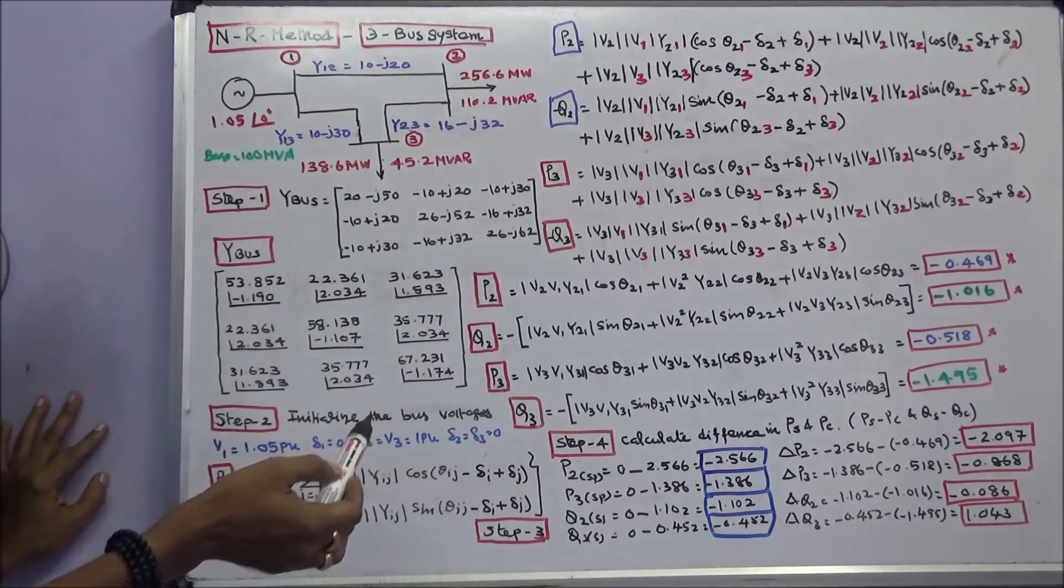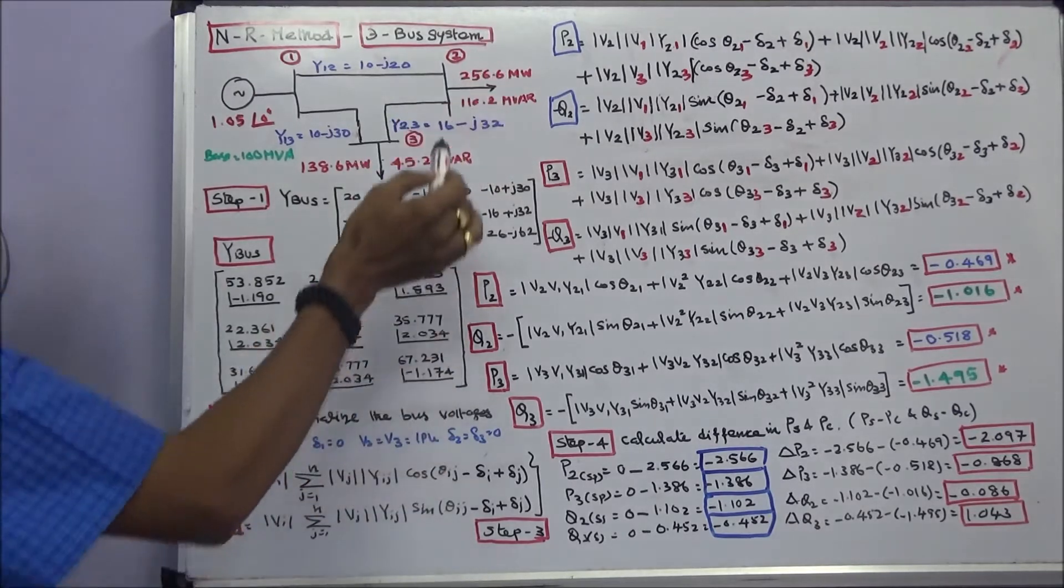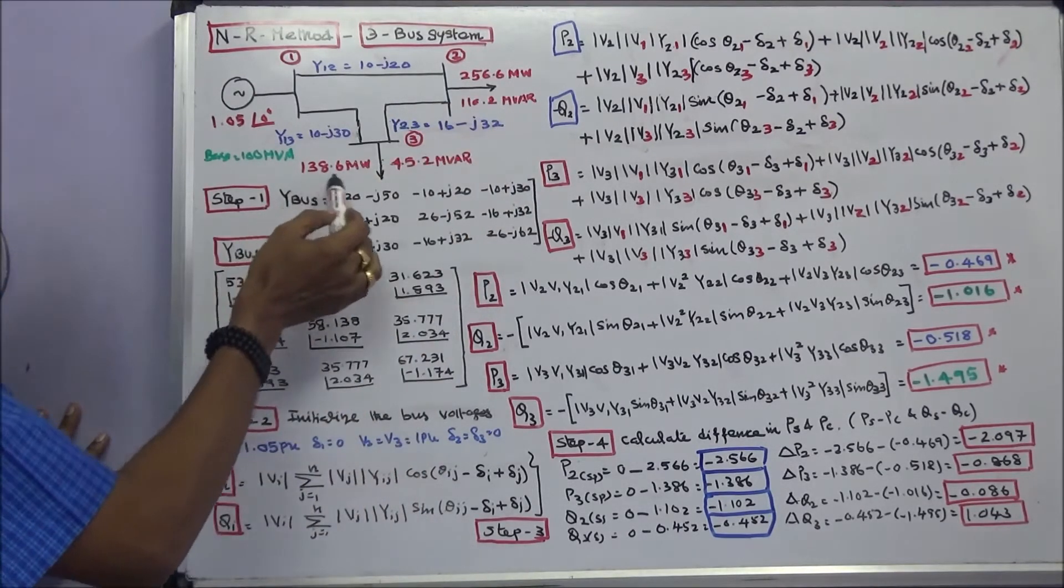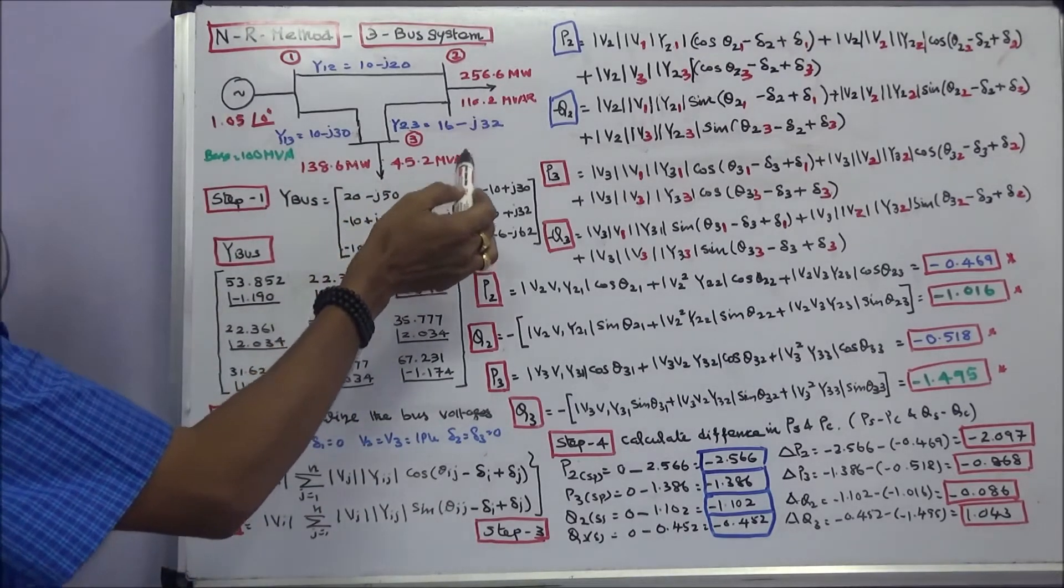Two and three are load buses. The real power is 256.6 MW, 110.2 MVAR. This is 138.6 MW, 45.2 MVAR.